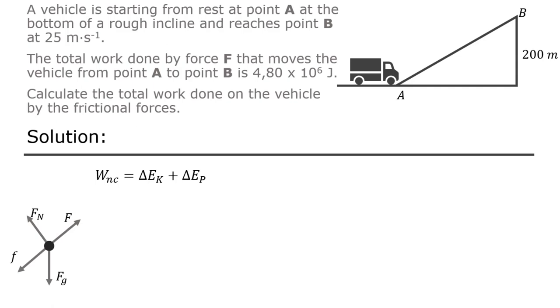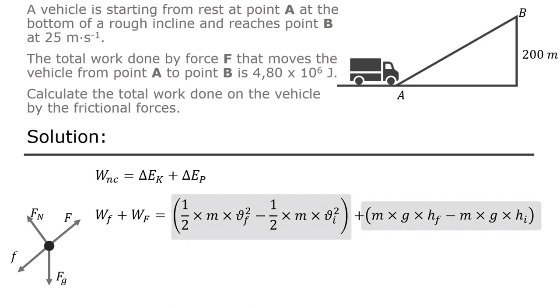So, for the left side of the equation, we can write work of friction plus work of force F. Kinetic energy is equal to 1 over 2 times mass times square of velocity. Potential energy is equal to mass times gravitational acceleration times height of the object from the reference level. So, take note that for both energies we subtract initial values from the final ones.